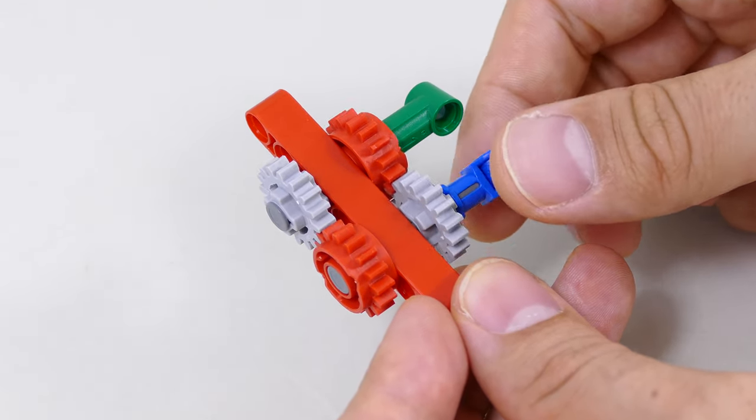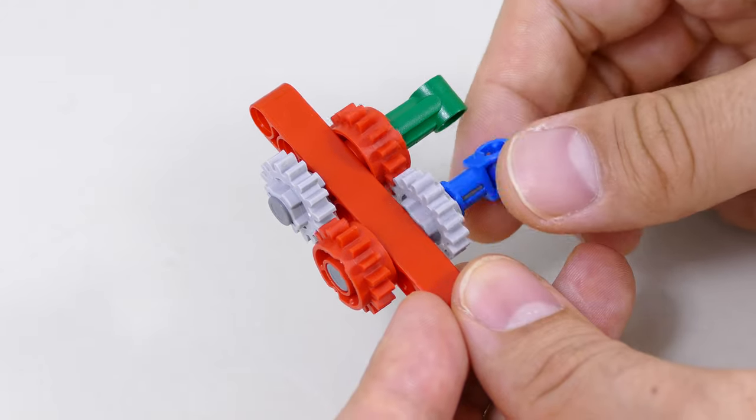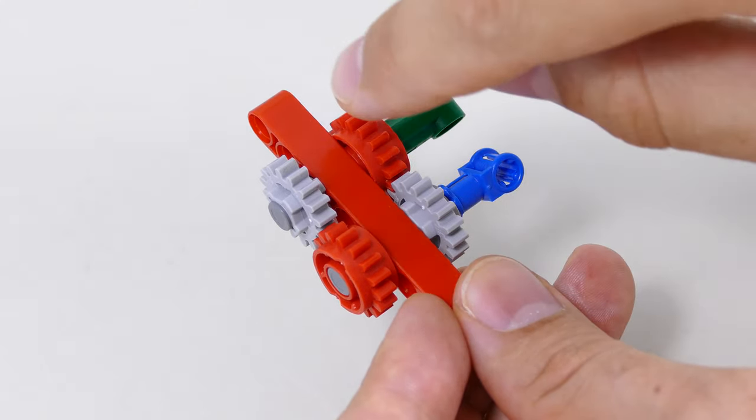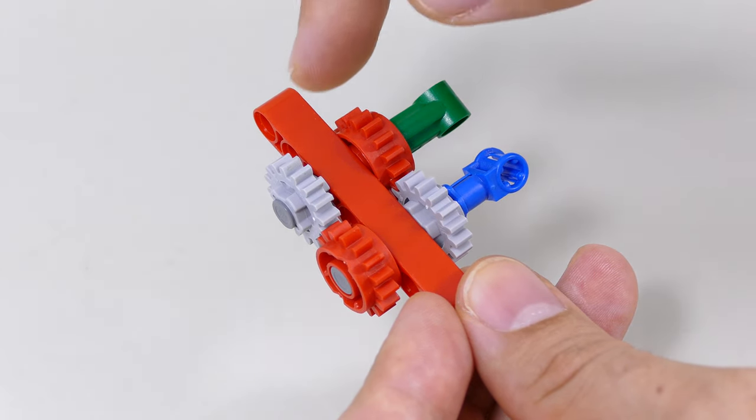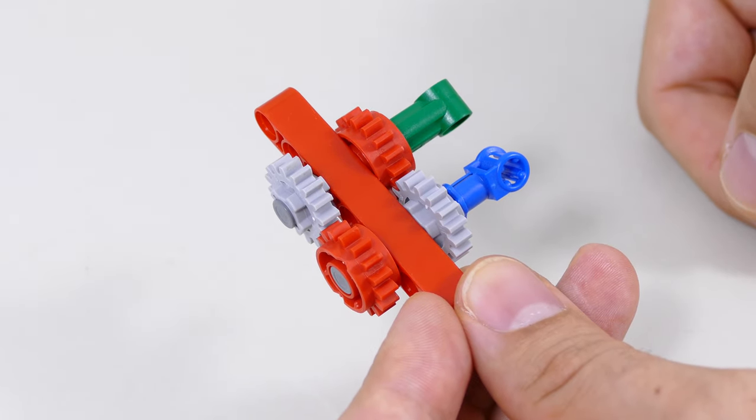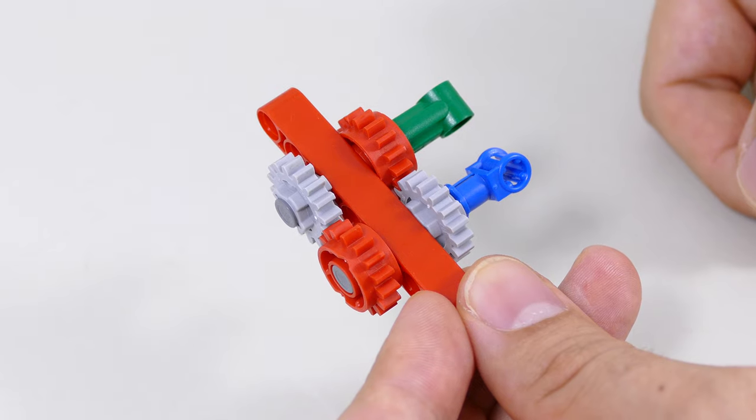So if you rotate the green connector on the axle you can see that only this drivetrain moves allowing you to build a function further on this side without interfering with the other one. And if I rotate the cross axle with the blue connector you can see that only this drivetrain moves without interfering with this one which means you can continue building another function over here. Quite useful right?